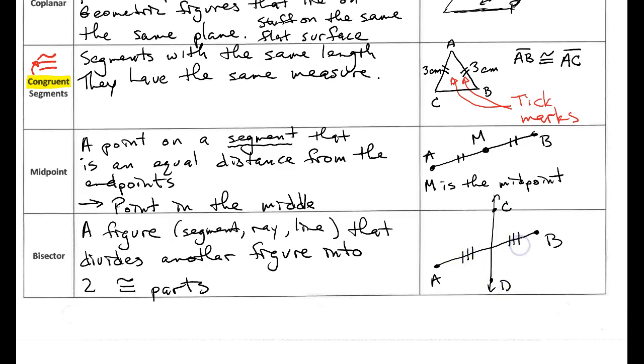And I know it bisects it because I'm going to draw some tick marks here. So since I have three tick marks to the left of the line and three tick marks to the right, I know that these pieces are actually half. So that's in the middle. I'll label that point M.